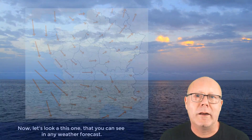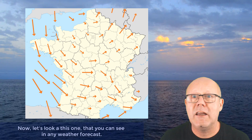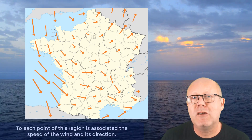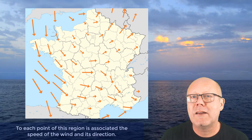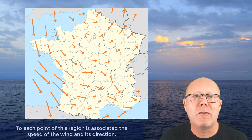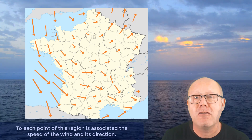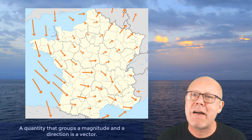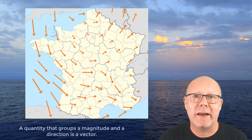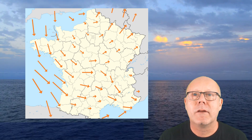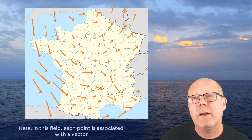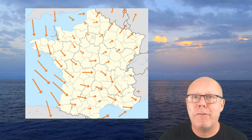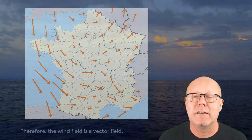Now, let's look at this one, that you can see in any weather forecast. To every point of this region is associated the speed of the wind, and also its direction. A quantity that groups a magnitude and a direction is a vector. Here, in this field, each point is associated with a vector. Therefore, the wind field is a vector field.